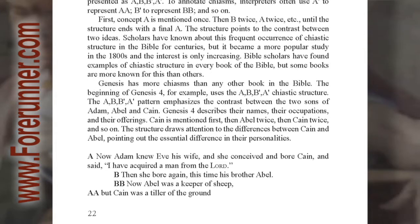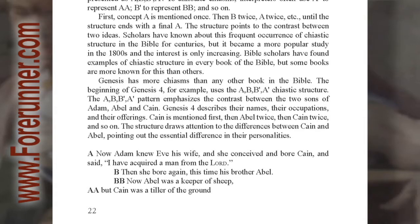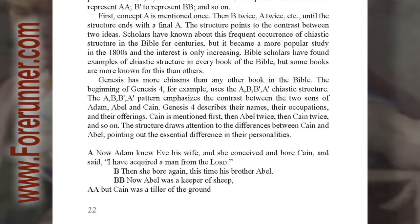The AB, B'-A' pattern emphasizes the contrast between the two sons of Adam, Abel and Cain. Genesis 4 describes their names, their occupations, and their offerings. Cain is mentioned first, then Abel twice, then Cain twice, and so on. The structure draws attention to the differences between Cain and Abel, pointing out the essential difference in their personalities.